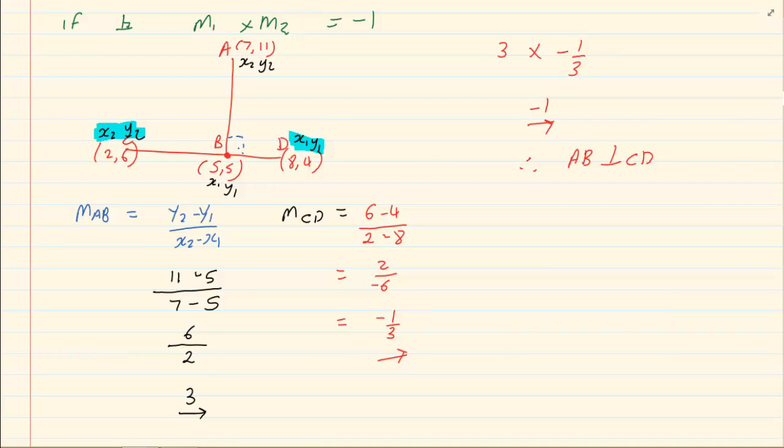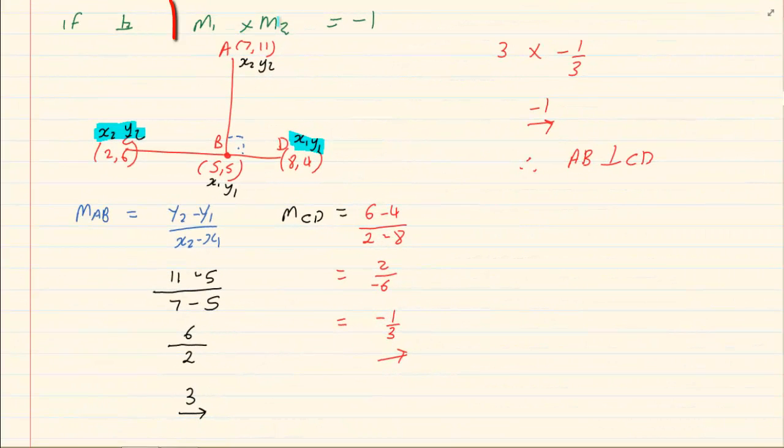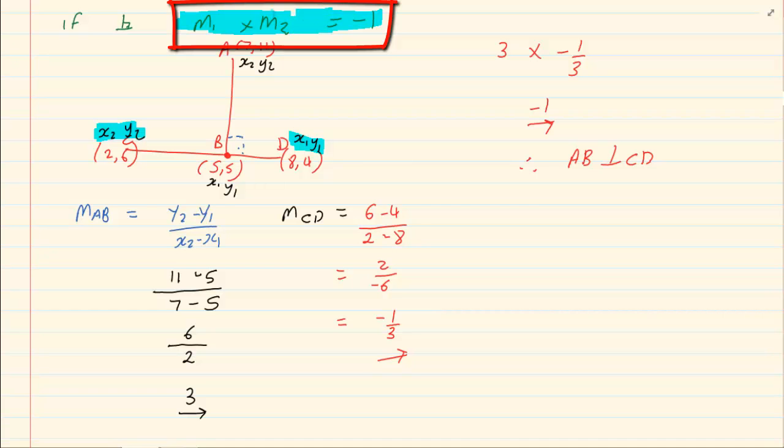What you must remember is that when we are proving they are parallel, then we have that M1 is equal to M2. But when we have that they are perpendicular, then we have that M1 times M2 is equal to negative 1.